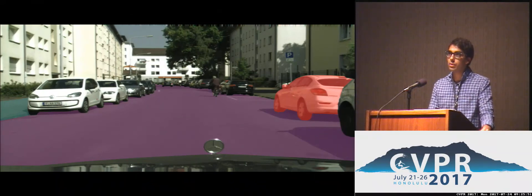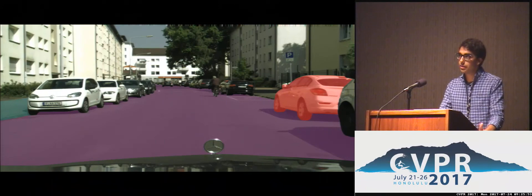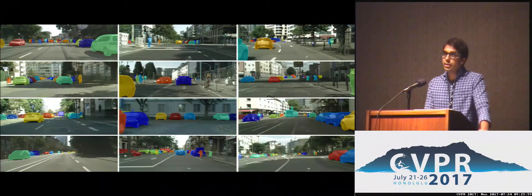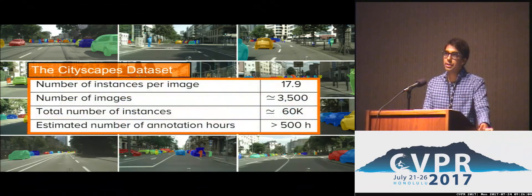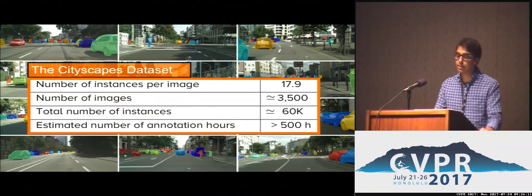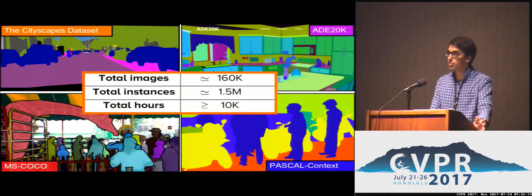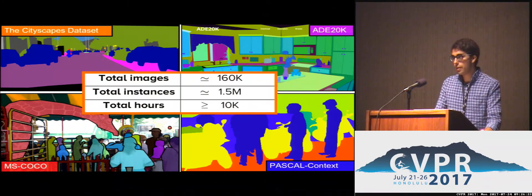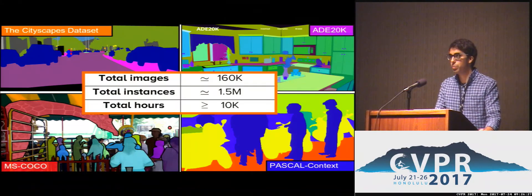While annotating these few instances might not seem like a lot of work, in an image like this one, there are more than 50 discrete object instances. Annotating all of them is expensive and very time-consuming. With an approximation of 30 seconds to annotate each instance, we estimate that it took more than 500 hours to annotate the more than 3,000 images in the Cityscape's dataset. Using the same approximation, we estimate that the community has already spent more than 10,000 hours annotating around 160K images. If we want to build the next generation of large-scale instance segmentation datasets, we need to speed up annotation.